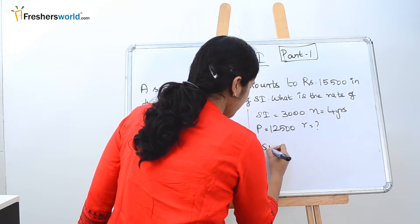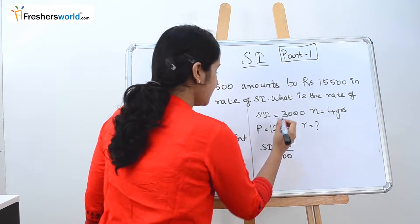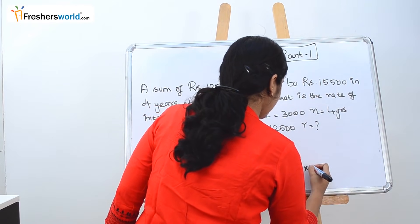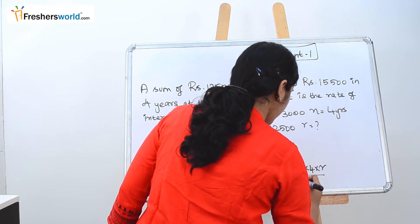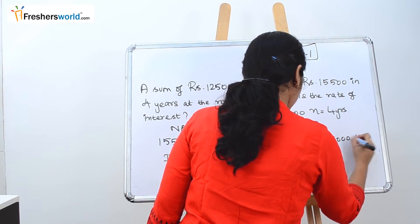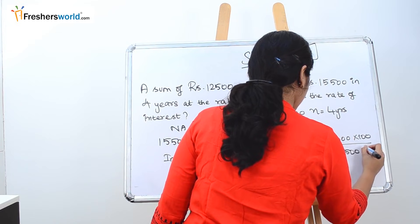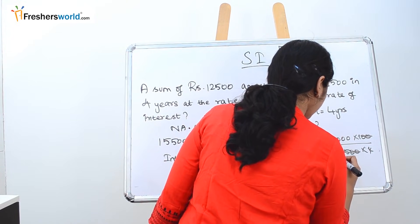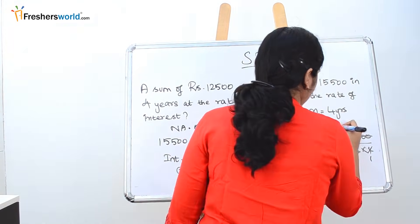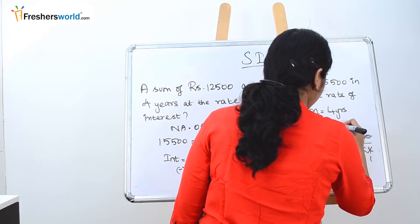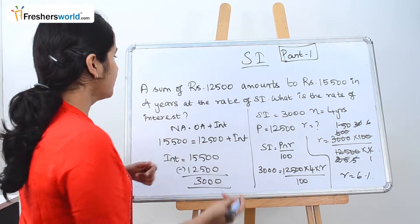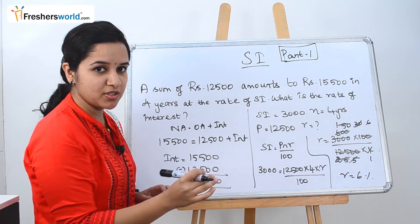Using Simple Interest equals PNR divided by 100: 3,000 equals 12,500 times 4 times R divided by 100. Taking the unknown R to one side, R equals 3,000 times 100 divided by 12,500 times 4. After cancelling, the rate equals 6%. So at the rate of 6%, the sum of 12,500 becomes 15,500 in 4 years.